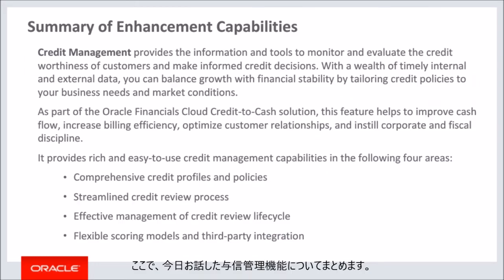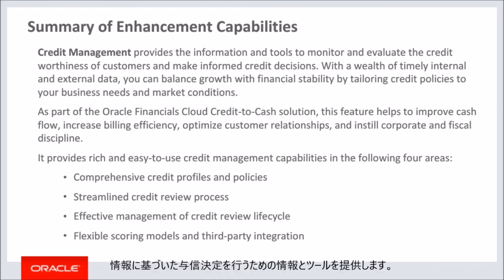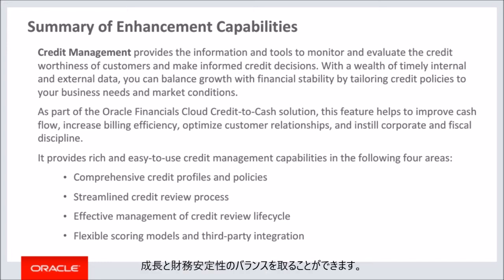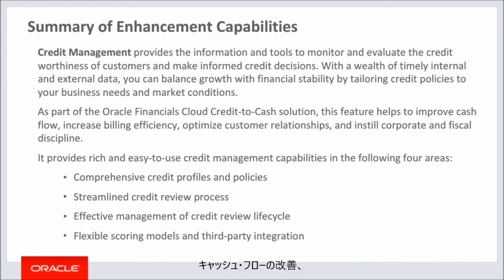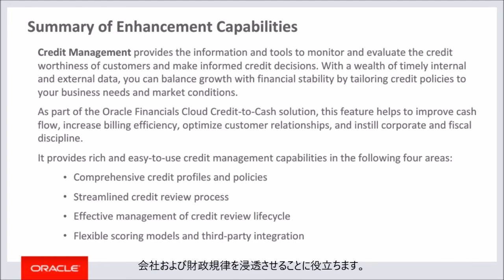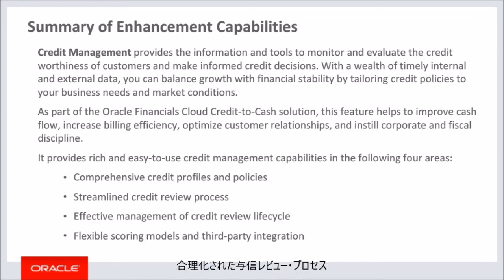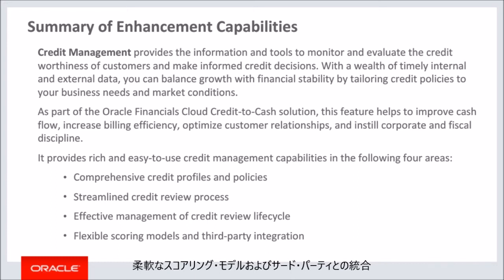Here is a summary of the credit management feature covered today. This feature provides information and tools to monitor and evaluate the credit worthiness of customers and make informed credit decisions. As part of the Oracle Financials Cloud credit-to-cash solution, it helps to improve cash flow, increase billing efficiency, optimize customer relationships, and instill corporate and fiscal discipline. This feature provides rich and easy-to-use credit management capabilities in four areas: comprehensive credit profiles and policies, streamlined credit review process, effective management of credit review lifecycle, and flexible scoring models and third-party integration.